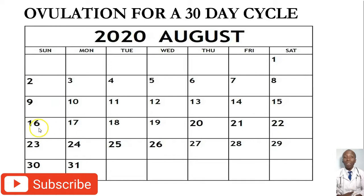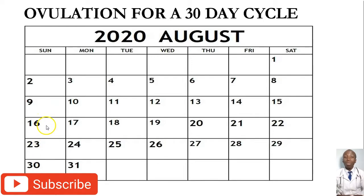Specifically, this is the day when your hormones — that is the luteinizing hormone and estrogen — are at their maximum. When we look at the ovulation calendar, you notice that during the 16th day, the luteinizing hormone and the estrogen hormone are at their peak. This is the date you are ovulating and this is the date you are most likely to get pregnant.